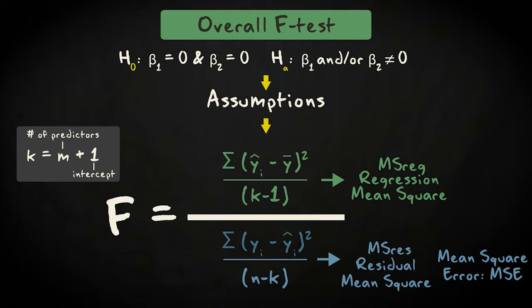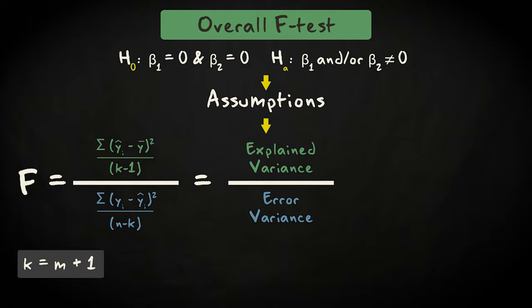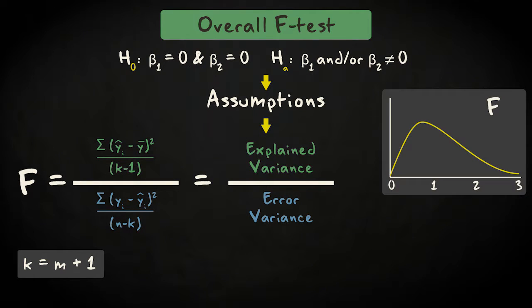Here's an example of an F-distribution. As you can see, the lowest possible value is zero, which occurs when the regression mean square equals zero, when our model captures none of the variation in the response variable. As our model captures more of the variation, the F-value goes up.